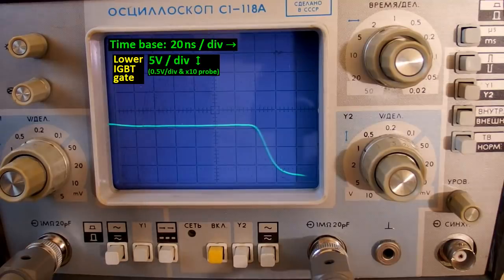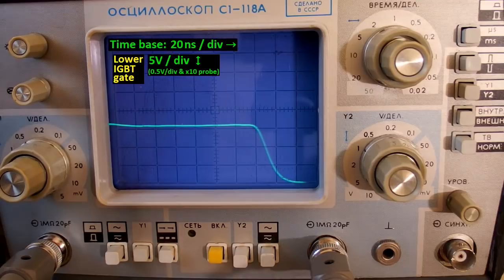And if I bypass the gate resistor, it reduces the discharging time to about 16 nanoseconds.